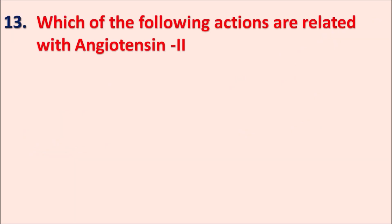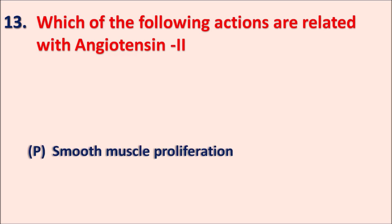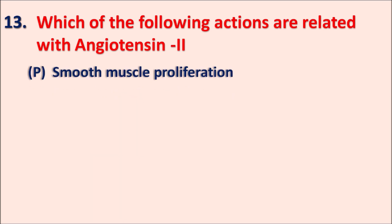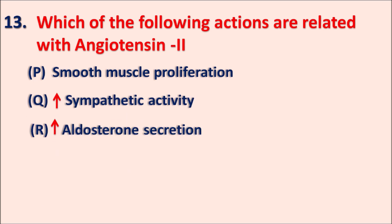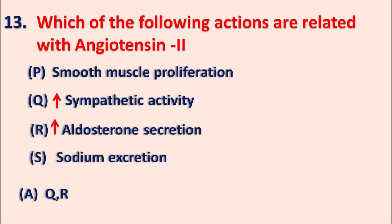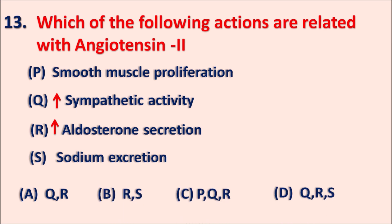Question thirteen: Which of the following actions are related with angiotensin II? P - smooth muscle proliferation, Q - increase in sympathetic activity, R - increase in aldosterone secretion, S - sodium excretion. Options are A: QR, B: RS, C: PQR, and D: QRS. The right answer is PQR. Angiotensin II can produce smooth muscle proliferation, increase sympathetic activity, and increase aldosterone secretion.